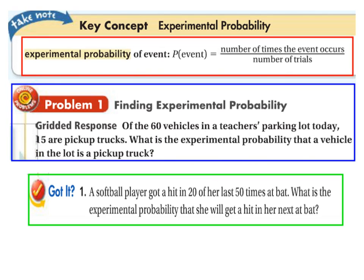What is the experimental probability that a vehicle in the lot is a pickup truck? We take the number of times that happens, which would be 15, and divide that by the total number of vehicles, which would be 60. Of course, we reduce that down. It reduces to 1 fourth, which would be 25%.